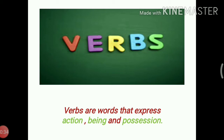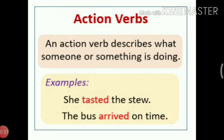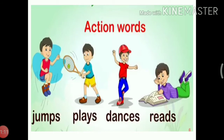So let us see some kinds of verbs. Number 1: Action verbs. An action verb describes what someone or something is doing. Examples: She tasted the stew. The bus arrived on time. The words tasted and arrived are action verbs. Some more action verbs are jumps, plays, dances, reads.